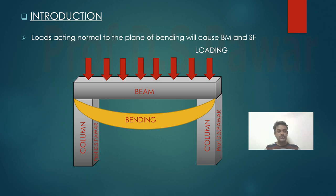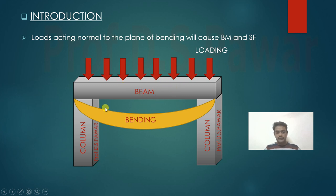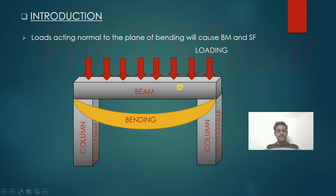In introduction to torsion, as you know, load acting normal to the plane of bending will produce the bending moment and shear force. You can see this is load normal to the plane of bending, so that's why bending of beam happens like this. Here are two columns; on the two columns the beam rests and the loading is applied on the beam, and due to that the bending of beam happens. Same way the shear force also. So normally we are going to design the beam for bending moment and shear force.